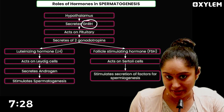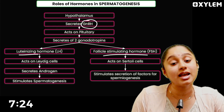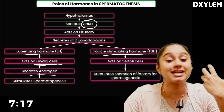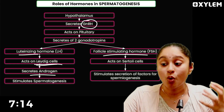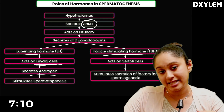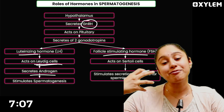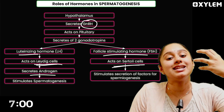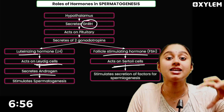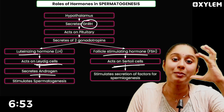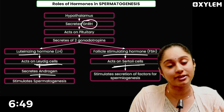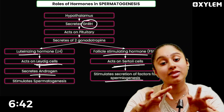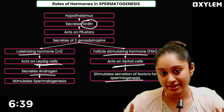Now, two hormones control spermatogenesis: LH (Luteinizing Hormone) and FSH (Follicle Stimulating Hormone). LH acts on Leydig cells — it stimulates them to secrete the androgen testosterone, which in turn stimulates spermatogenesis and secondary sexual characters. FSH acts on Sertoli cells, which are the nourishing cells. Sertoli cells stimulate the conversion of spermatid to sperm — spermiogenesis. So LH and FSH together control all the hormonal functions in males.